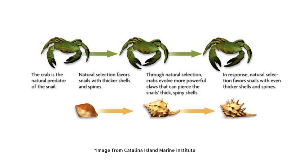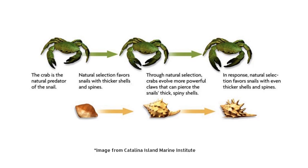There was once a very hungry crab. He had a craving for some delicious snails. However, when the crab went to dig his claws into the snail's shell, he noticed it was thick and spiny. What he didn't know was that the snails had evolved these types of shells so that they would not get eaten by him.